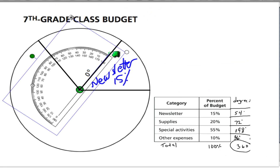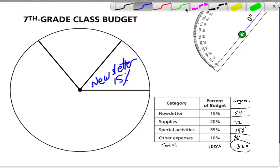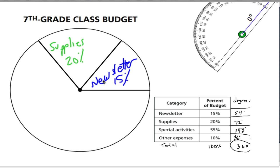There it is. And again, protractor, we moved away. Labeled the section. That was our supplies. Next, we have special activities. Now, special activities is a 198 degree angle. Our protractor only goes up to 180 degrees. So, what I would normally do is skip ahead to the other expenses, make a nice small 36 degree angle, and then whatever is left over is this large angle. But I'd like to show you how to actually draw out a 198 degree angle with a 180 degree protractor.